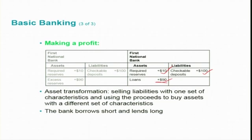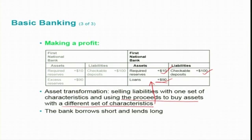What the bank did here is nothing but asset transformation — selling liabilities, which are the checkable deposits with one set of characteristics (liquidity, risk, size, and return), and using those proceeds to buy assets with a different set of characteristics, namely loans. This process is called asset transformation, and through it banks make profit. The bank borrows short because checkable deposits can be withdrawn at any time — the bank is borrowing from you for the short term — and then using those proceeds the bank lends for the long term.